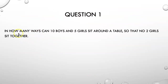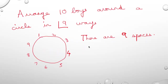Coming to Question 1: In how many ways can 10 boys and 5 girls sit around a table so that no two girls sit together? We first arrange the 10 boys around the circle. By our earlier formula, this can be done in 9 factorial ways.